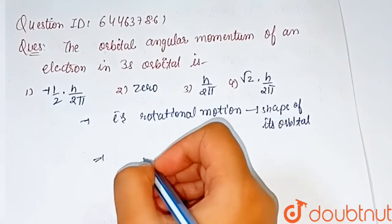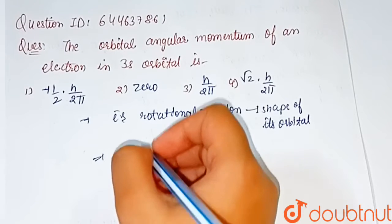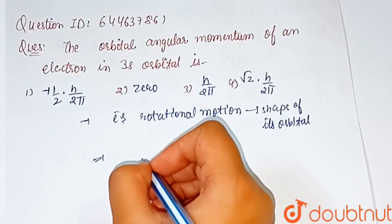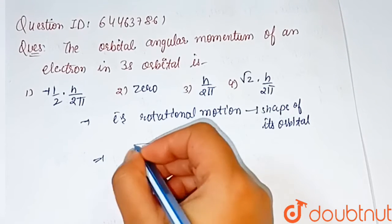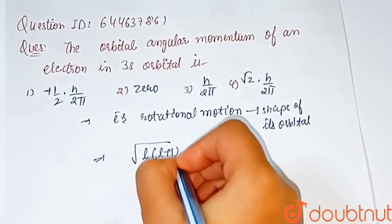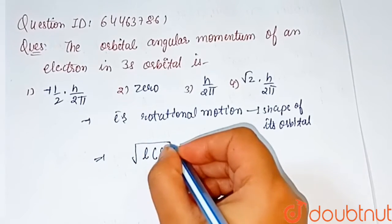The expression for orbital angular momentum of an electron is √(l(l+1)) × h/(2π).